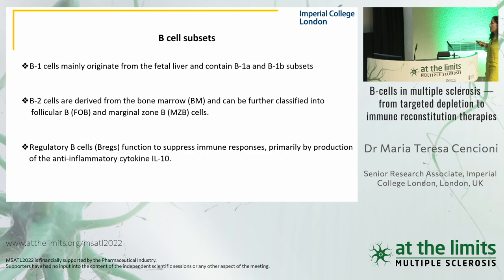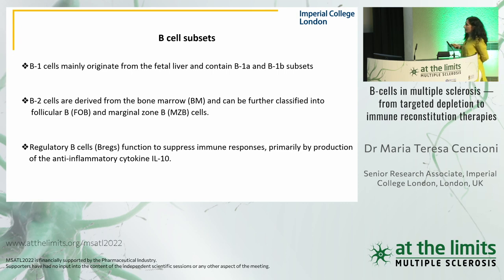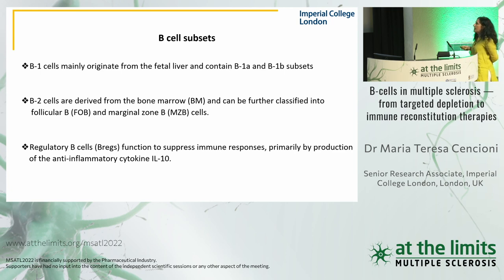We know that there are different subsets of B cells. B1 cells are mainly originating in the fetal liver and contain two subsets, B1a and B1b. B2 cells derive from bone marrow and are the progenitors of follicular B cells and marginal zone B cells, from which differentiate switched memory B cells and plasma cells.